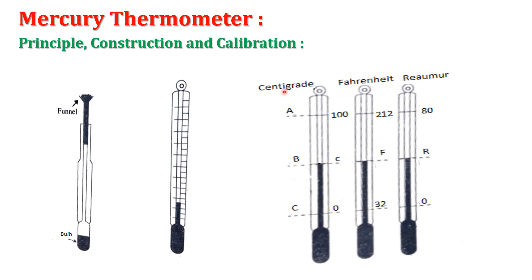Once kept for a long time, the thermometer is used for calibration. For calibration, we choose a suitable scale — whether centigrade, Fahrenheit, or Réaumur scale. We mark two fixed points: the lower fixed point, which is the temperature of the melting point of ice, and the upper fixed point, which is the temperature of steam or the boiling point of water.